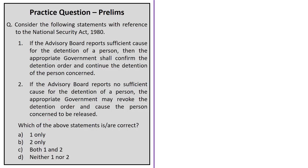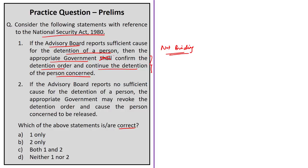The next question is on the National Security Act 1980. Statement one says that if the advisory board reports sufficient cause for detention, the appropriate government shall confirm the detention order. This is wrong — the word 'shall' implies mandatory action, but the report of the advisory board is not binding on the appropriate government when it reports sufficient cause. The correct word is 'may' confirm, as the government has discretion to release the detainee if it considers fit.